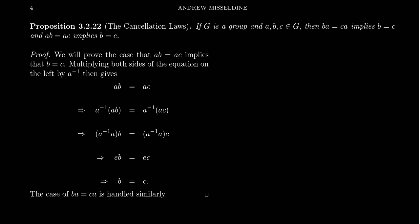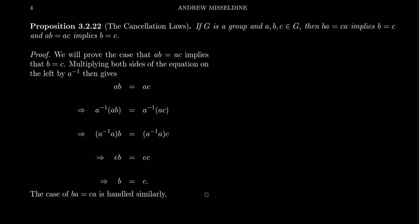In this video we're going to prove the so-called cancellation laws of a group, and they're stated in the following way. Let G be a group and take elements a, b, c. These are just arbitrary elements in the group, but they have the condition that b times a is equal to c times a.